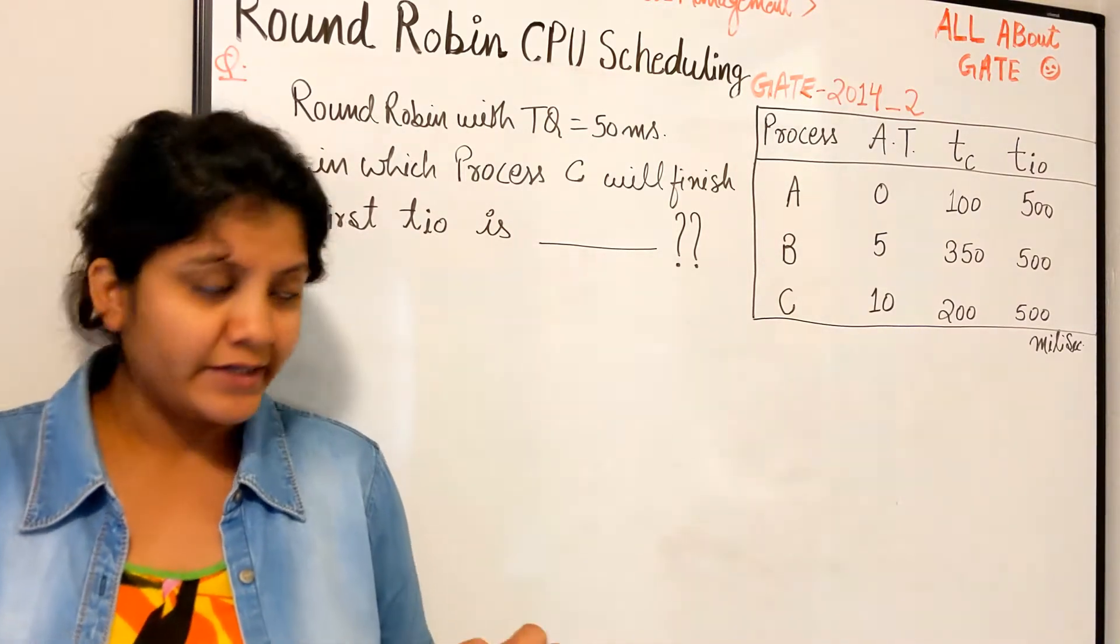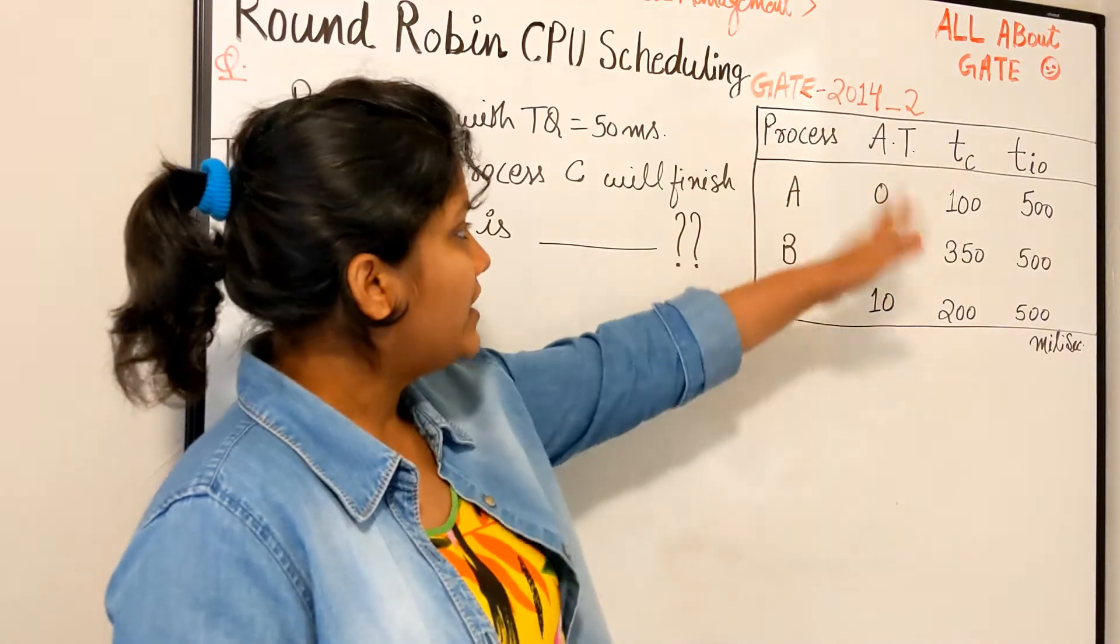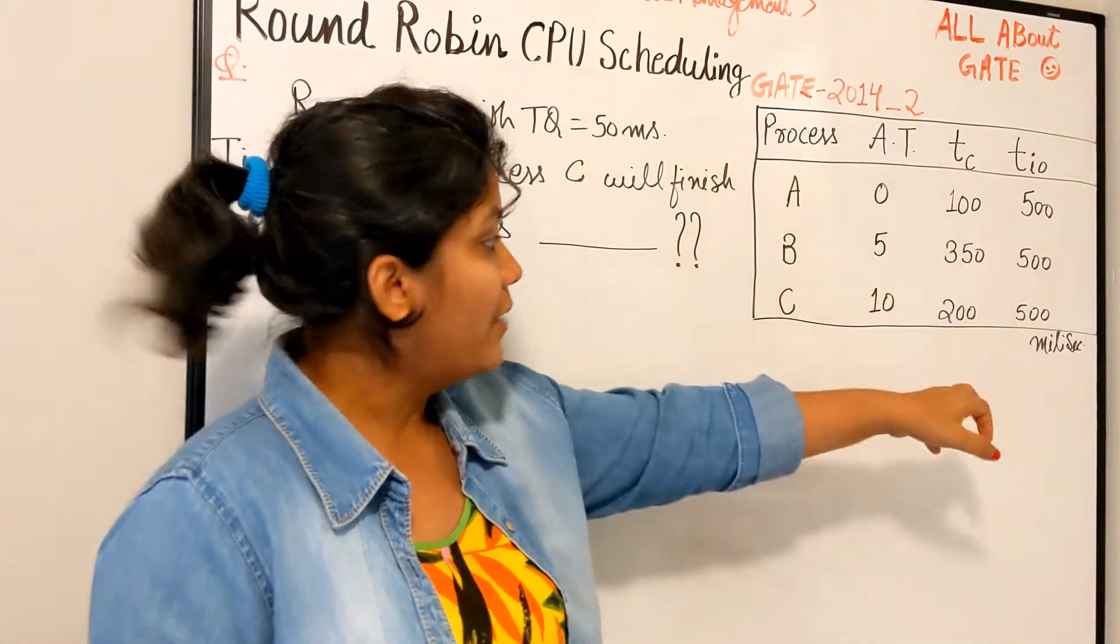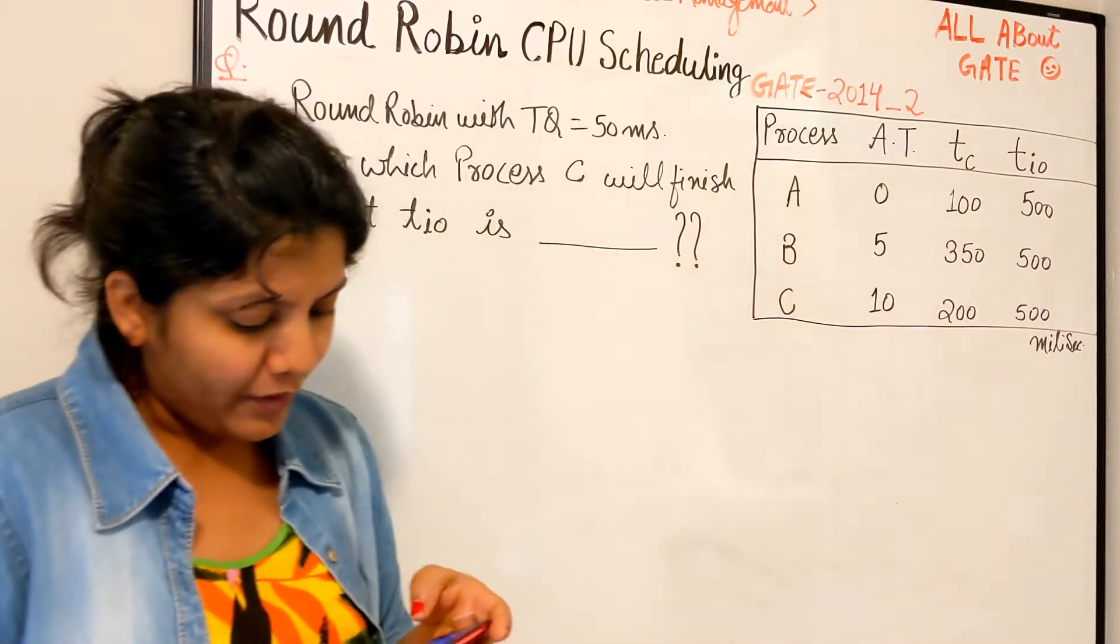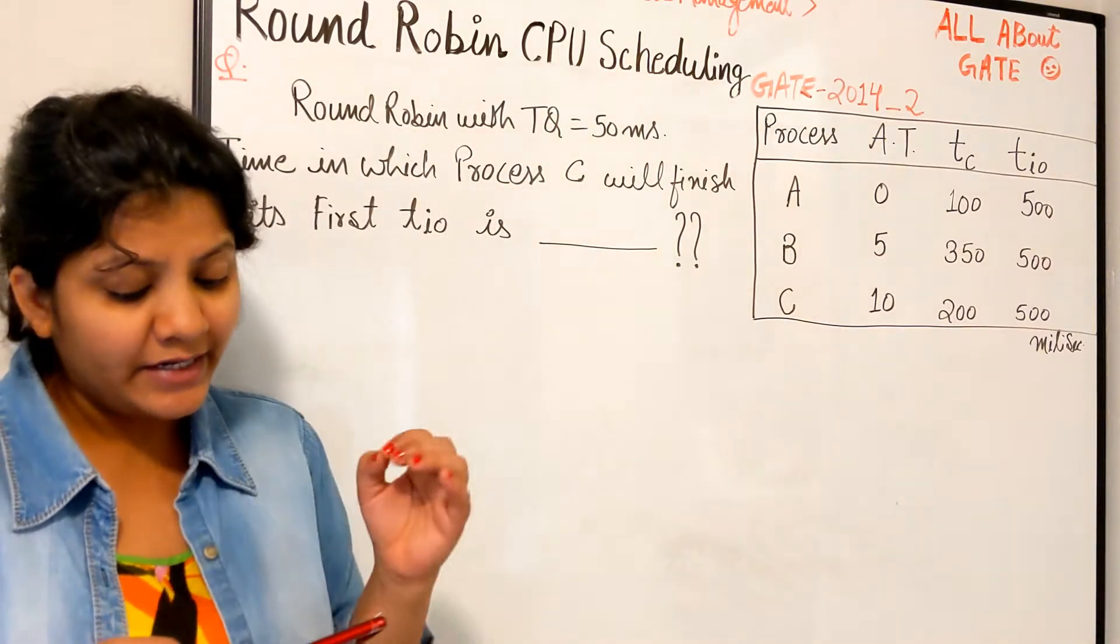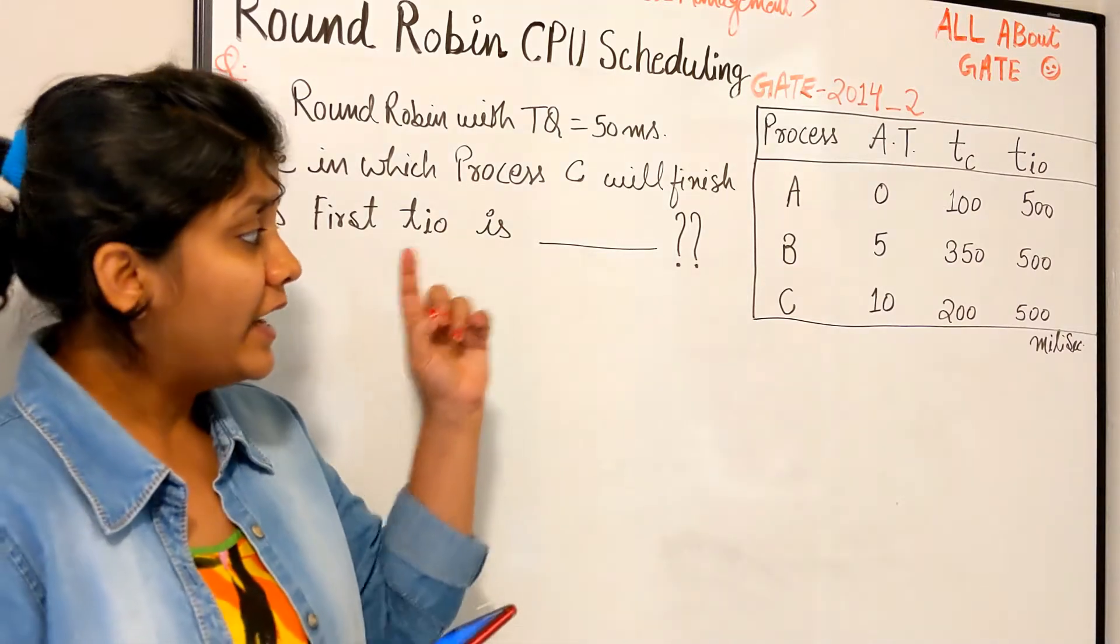The processes have the following characteristics. So the characteristic is right here. We have three processes, their TC and their TIO requirement in milliseconds. Okay, the processes A, B, and C are started at times 0, 5, and 10 milliseconds.